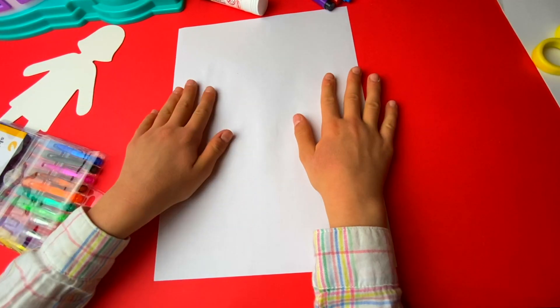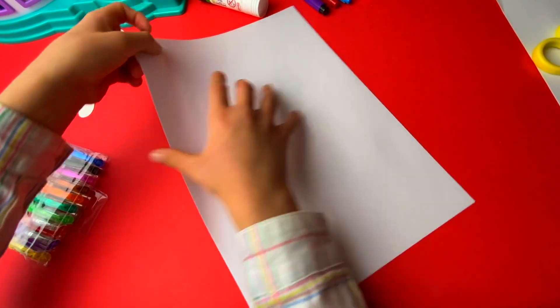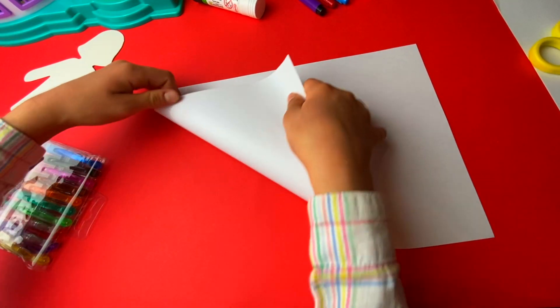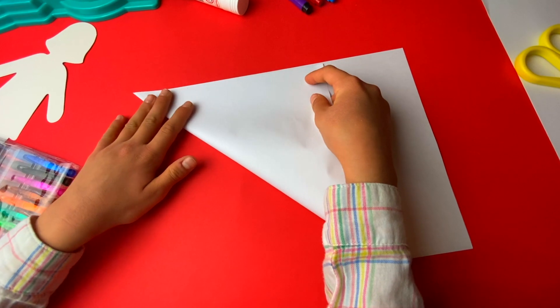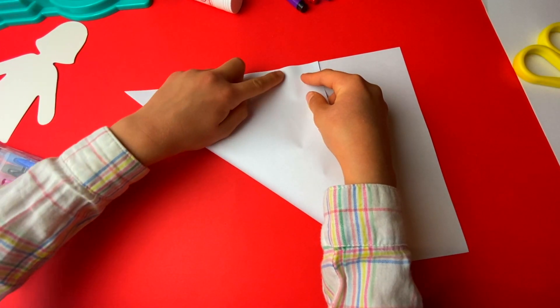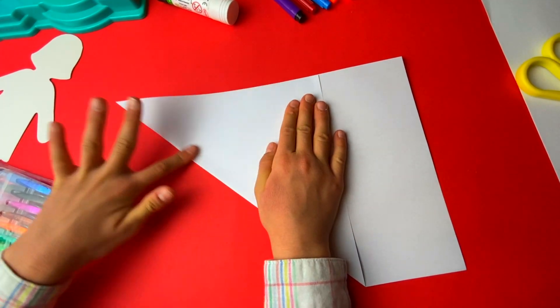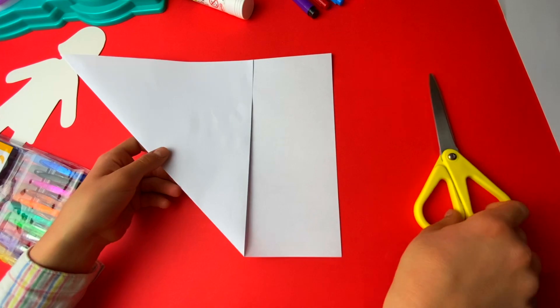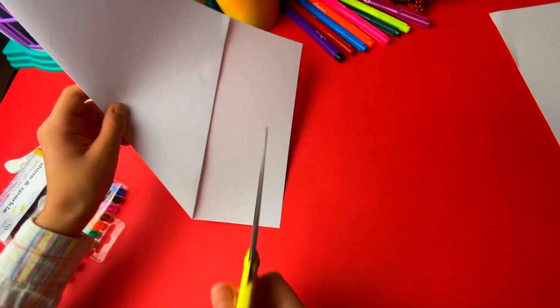So first we need an A4 paper and then we need to get a corner and fold it to the opposite line. And then we need to get scissors and we need to cut this side, this spare side.